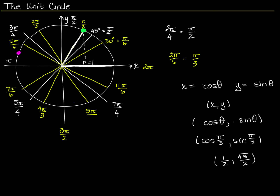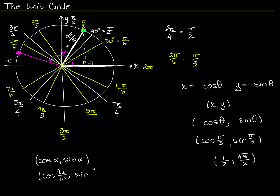This is true for any point on the unit circle. Let's call this angle here alpha. The coordinates of that point are cosine alpha, sine alpha. Even though alpha is not one of our nice familiar angles that we can look up in a table, it still applies. If I tell you that alpha is, say, 9 pi over 10, then the coordinates of my pink point are cosine of 9 pi over 10 comma the sine of 9 pi over 10.